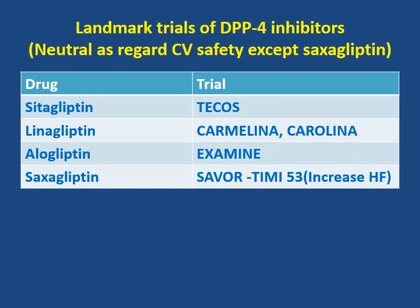What are the landmark trials of DPP-4 inhibitors? These are generally neutral regarding cardiovascular safety, except saxagliptin which increases heart failure hospitalization and should be avoided in patients with heart failure. The TECOS trial showed the neutral effect of sitagliptin. The CARMELINA and CAROLINA trials showed the safety of linagliptin. The EXAMINE trial showed the safety of alogliptin. And SAVOR-TIMI 53 showed the increased heart failure hospitalization with saxagliptin.